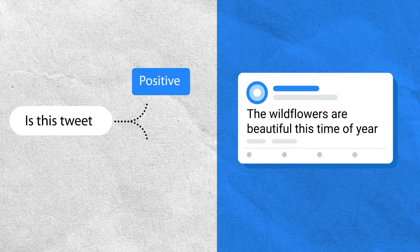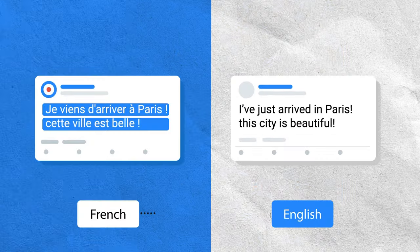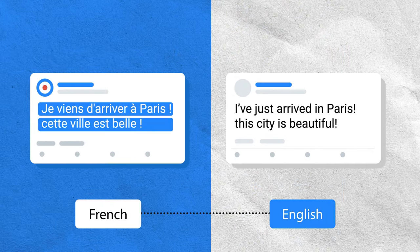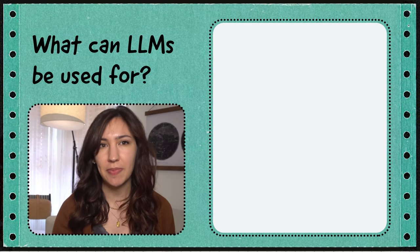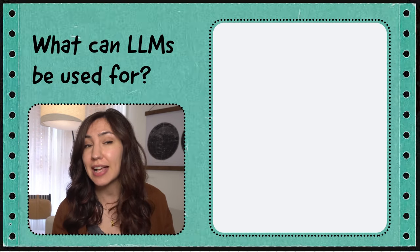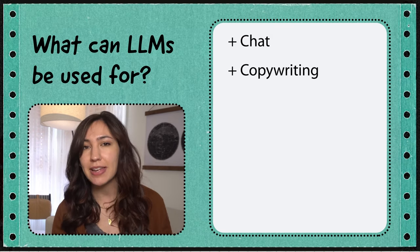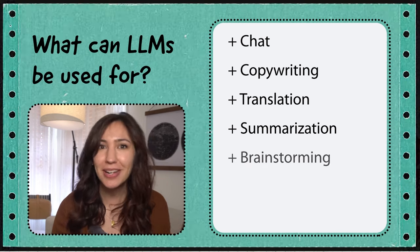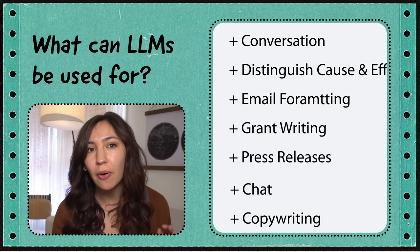If you're already familiar with machine learning, you probably think about training a model for a specific task, like whether a tweet is positive or negative, or translating text from French to English. But what makes LLMs especially powerful is that one model can be used for a whole variety of tasks, like chat, copywriting, translation, summarization, brainstorming, code generation, and a whole lot more. Best of all, you can prototype language applications incredibly fast with LLMs — in just minutes rather than months — and you don't have to be a machine learning expert to do it. All you really need to know is how to write.